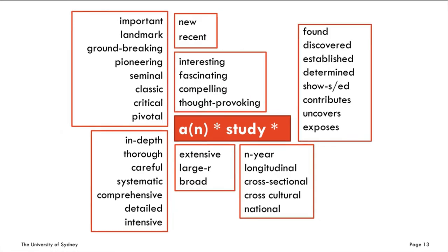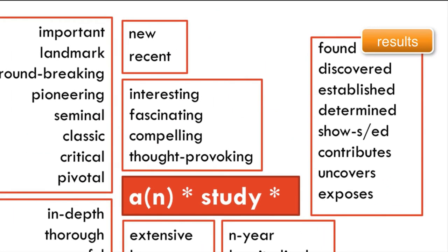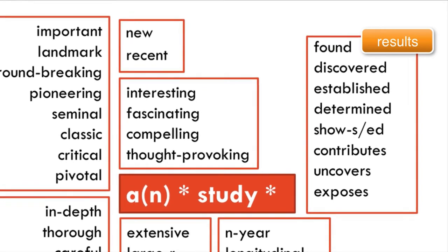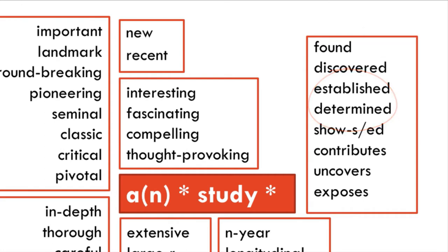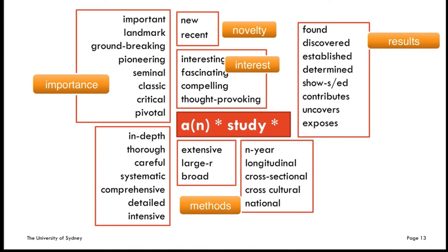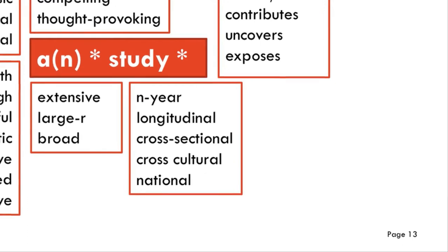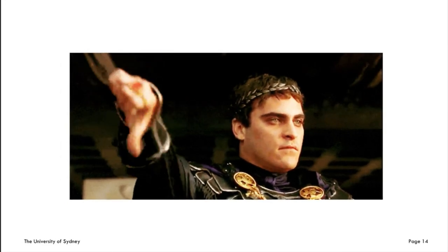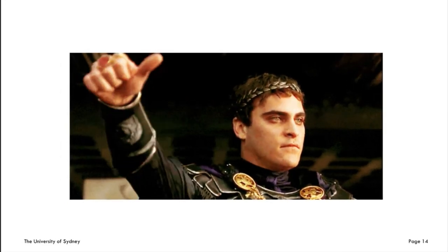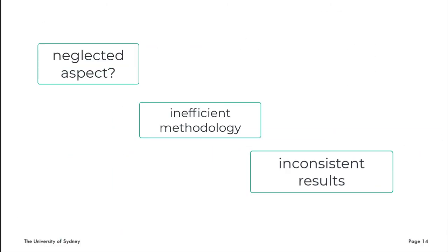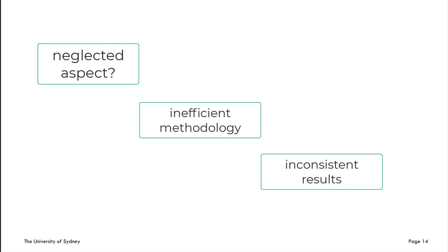We are also evaluating when we use verbs that indicate that a study's findings can be interpreted with a high degree of certainty. So if we say that a study 'determined' or 'established' something, the finding is being presented as a fact. Obviously, this list is not exhaustive. All of these examples evaluate previous research positively. However, you will have to identify some negative or neglected aspect in previous work — otherwise, your research might not be needed. Maybe there's an aspect that has not been given enough attention, a methodology that is not quite efficient, or simply inconsistency in the results.